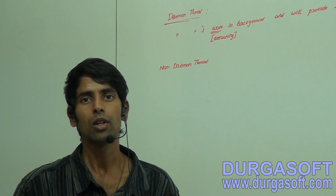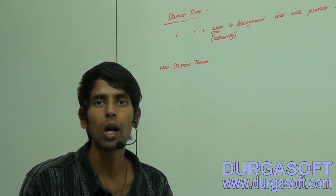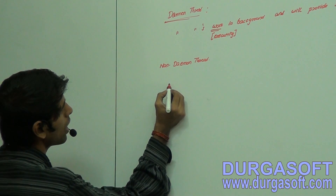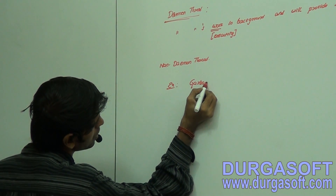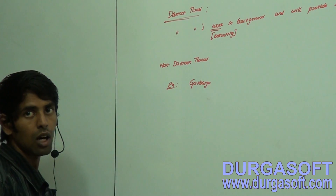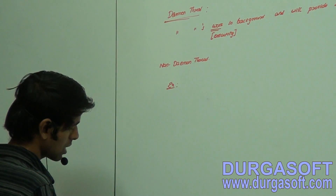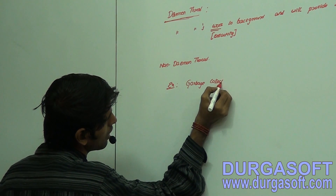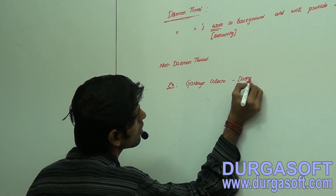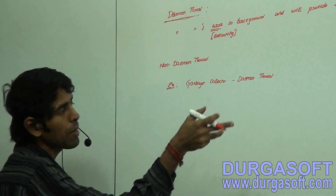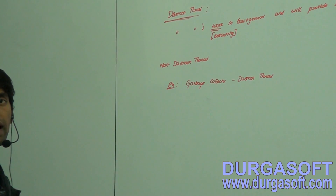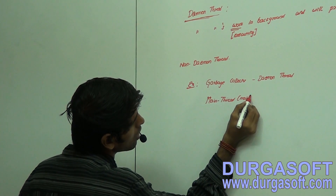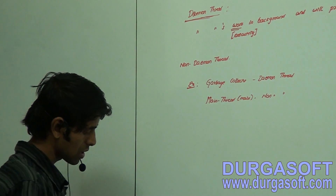The best example of a daemon thread is our garbage collector, which works in the background to give support for a non-daemon thread — the main thread. By default, the main thread is a non-daemon thread. The garbage collector is a daemon thread supporting the main thread.